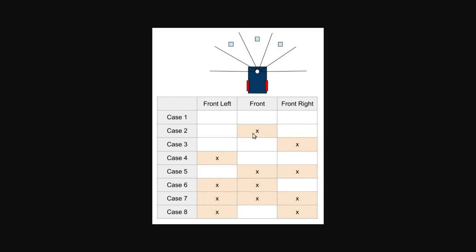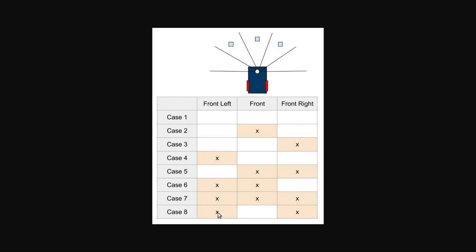Let's take a look at this image. For the obstacle avoidance task we are going to use only the front, front right, and front left regions of the laser. We have basically eight cases. The first case: no obstacles in any of these three regions. Then: obstacle only in the front region, then front right, then front left. Then we match front with front right, front with front left, and all three regions together. Finally, front left and front right only.